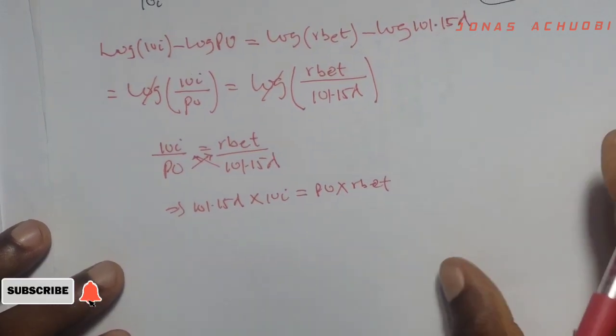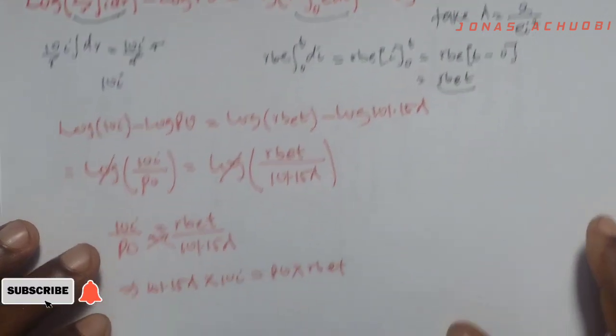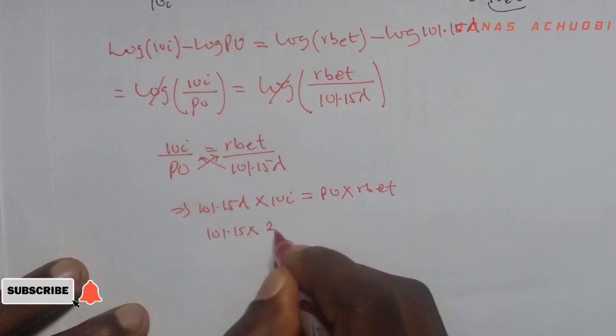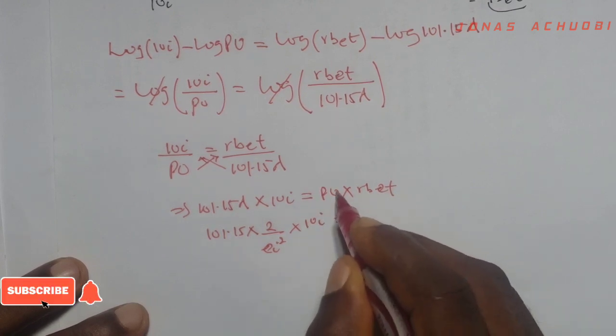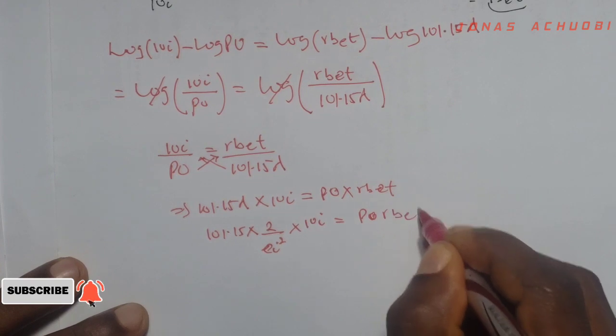But what's the value of lambda? We are given that lambda is 2 over ei squared. So this becomes 101.15 times lambda is 2 over ei squared times 10i, equal to po times rbet, is porbet.